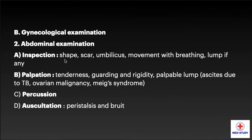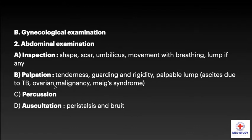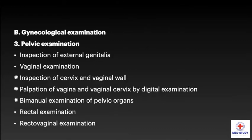Now coming to the second point in gynecological examination: abdominal examination. First is inspection — we have to look for shape, scars, condition of the umbilicus, movement with breathing, and any lump if present. Then palpation: for tenderness, guarding, and rigidity, and palpable lump, as well as ascites due to tuberculosis, ovarian malignancy, and Meigs syndrome. Then comes percussion, and the last point is auscultation for peristalsis and any bruit heard.